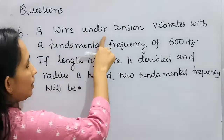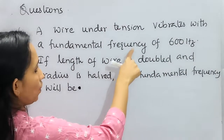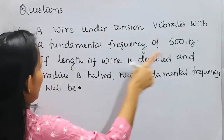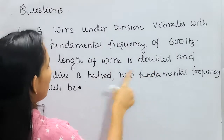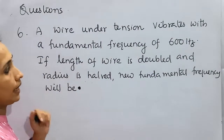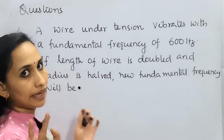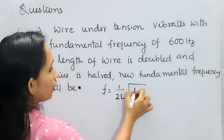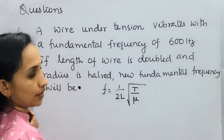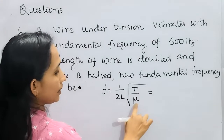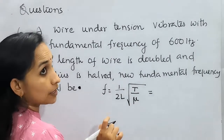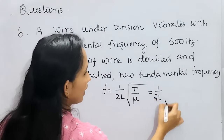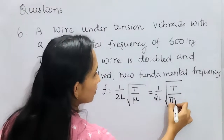Sixth question: a wire under tension vibrates with a fundamental frequency of 600 Hz. If the length of the wire is doubled and radius is halved, what is the new fundamental frequency? The general equation is f = (1/2L)√(T/μ). Tension is unchanged. Mass per unit length μ = πr²ρ, so f = (1/2L)√(T/πr²ρ).